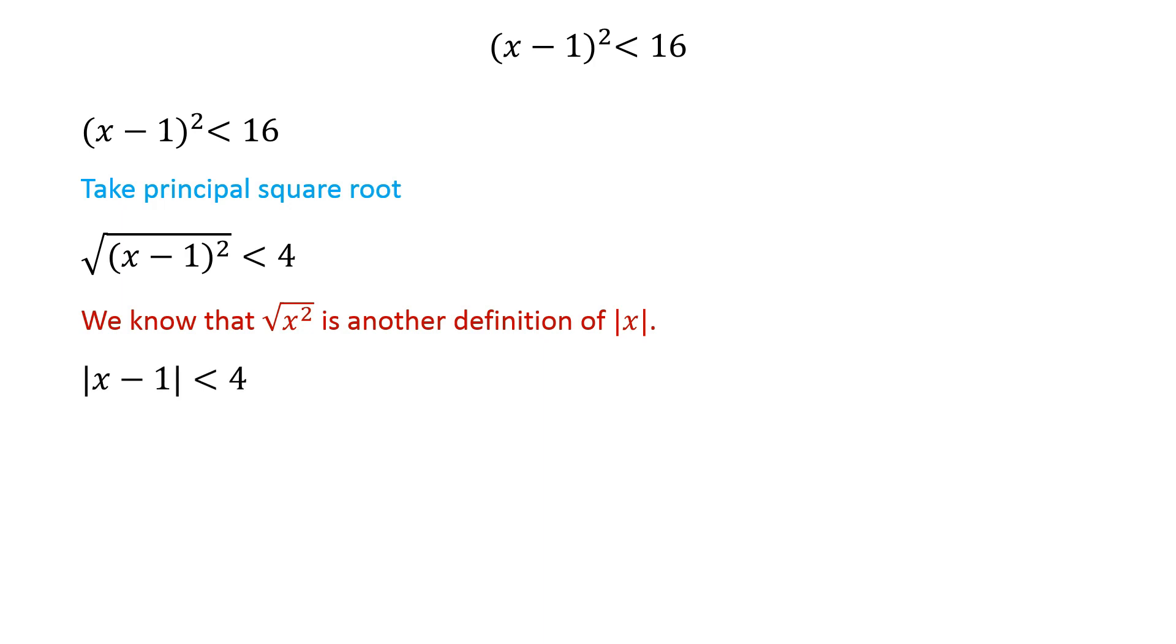|x - 1| < 4. This implies that the quantity x - 1 lies between negative 4 and 4.